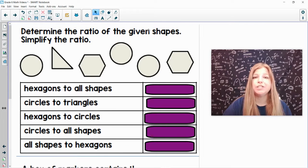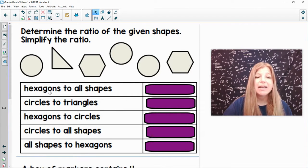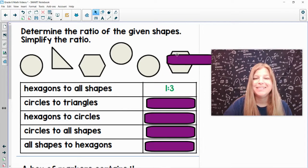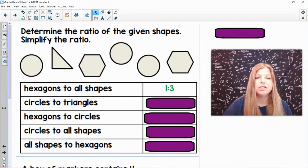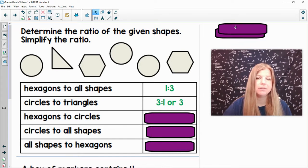Determine the ratio of the given shapes. Simplify the ratios. So now we have some different shapes. Hexagons. Hexagons are your six-sided figures. Hexagons to all shapes. So I have one, two hexagons out of one, two, three, four, five, six. Two to six would simplify to one-third. Circles to triangles. There are one, two, three circles to one triangle. Three to one, which is just three.